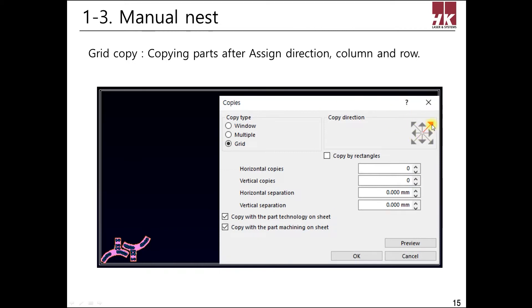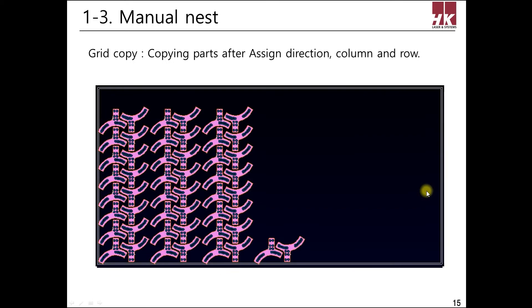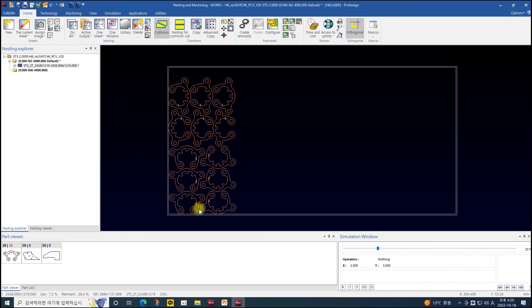If trying to copy a small part inside a large part with machining, click both 'copy with the part technology on sheet' and 'copy with the part machining on sheet' to copy the part and machining together. I will show it in the program.